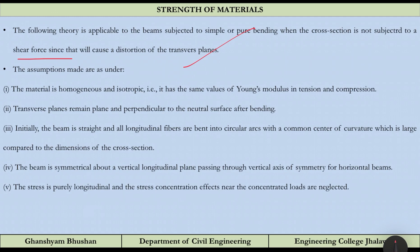The first assumption in the Theory of Simple Bending is that the material is homogeneous and isotropic, meaning it has the same value of Young's modulus E in both compression and tension. Homogeneous means the property is the same at any point in the material, and isotropic means the property is the same in any direction at a given point. This gives a constant Young's modulus throughout the section.